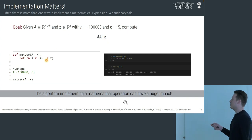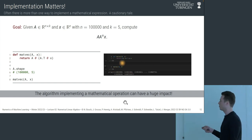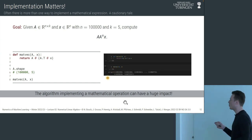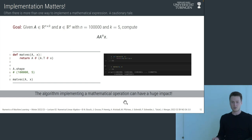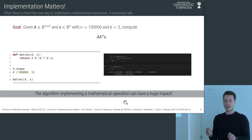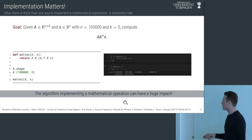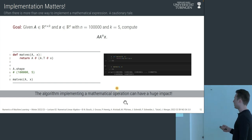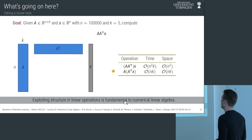With the correct parentheses, the operation runs in about 0.3 seconds — very quick. The algorithm implementing a mathematical operation has a huge impact on performance, stability, and memory consumption. What's happening here is that A A^T x involves a low-rank matrix — at most rank k — and there's a more efficient way to multiply with a low-rank matrix than computing the full n×n matrix first.